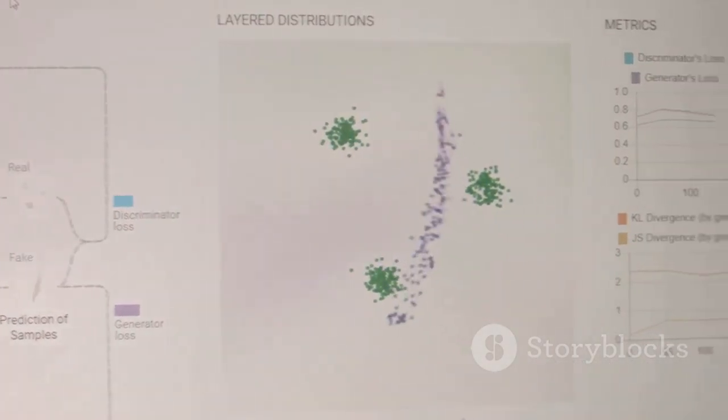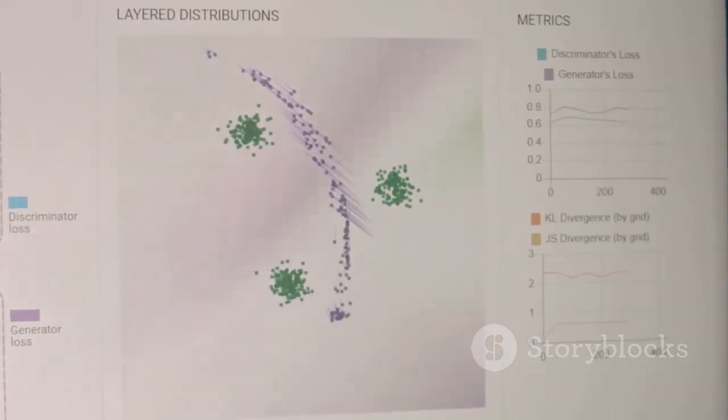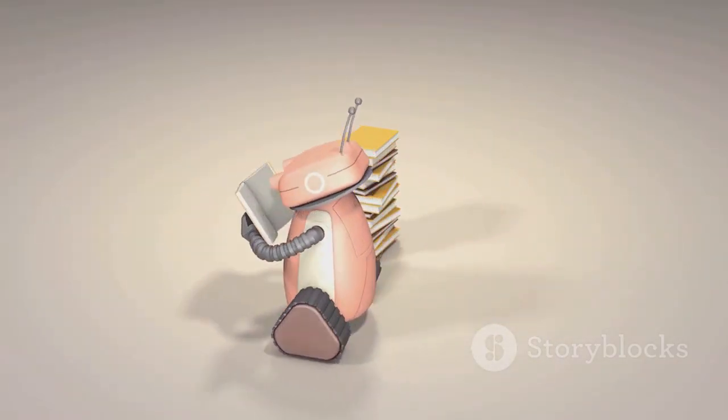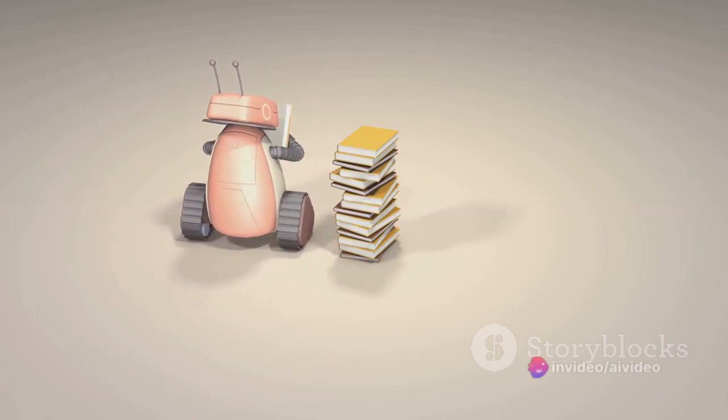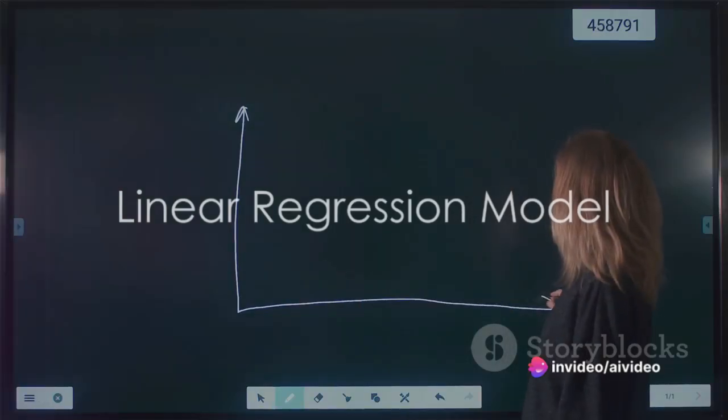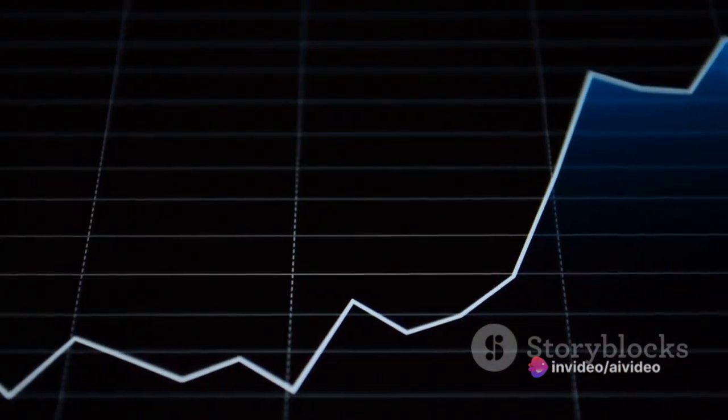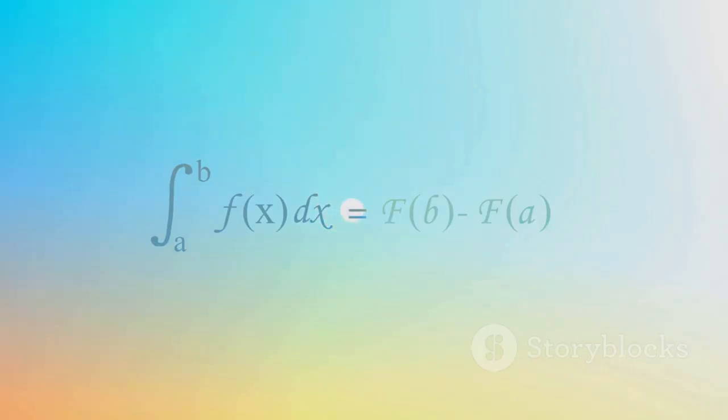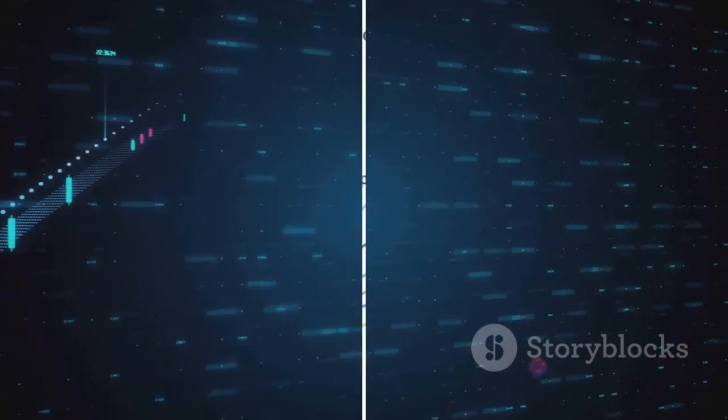Think of a dataset filled with the heights and weights of thousands of people. The goal is to create a model that uses a person's height to predict their weight. The relationship between weight and height often appears linear. As height increases, weight typically follows. This relationship can be encapsulated by a linear regression model, which fits a straight line to the data.